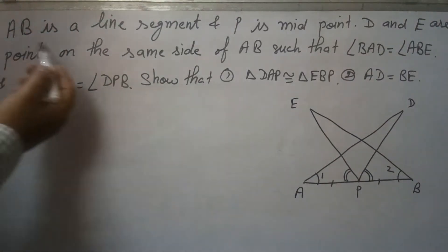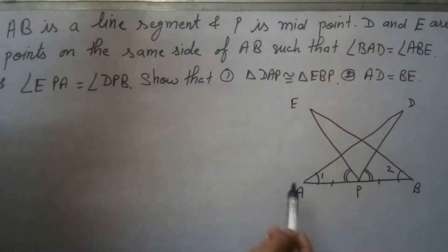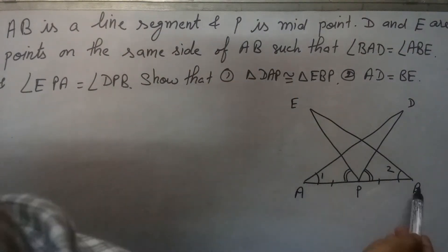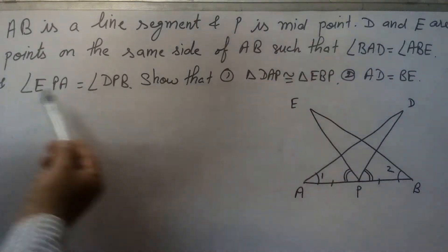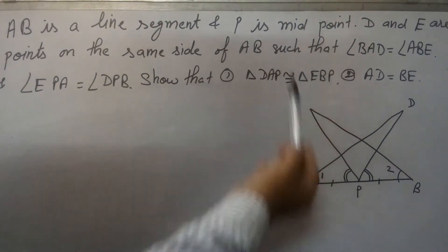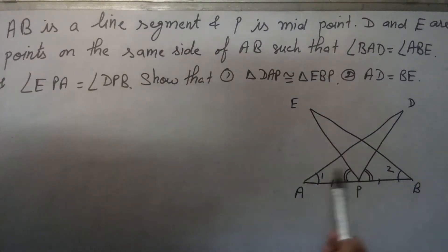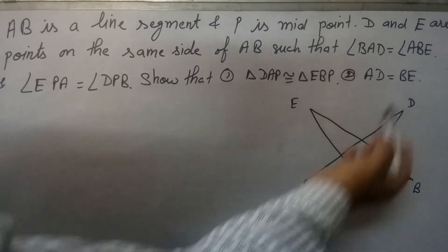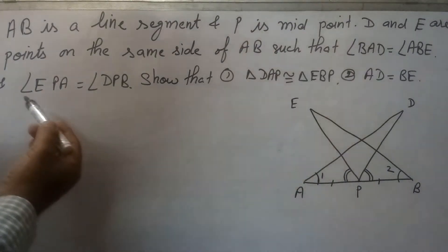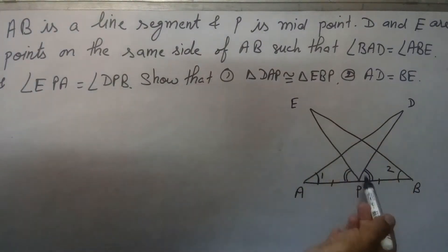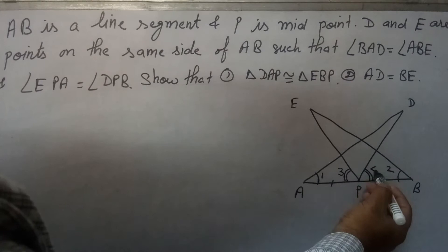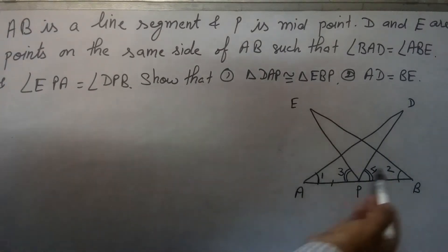Students, the question is: AB is a line segment and P is the midpoint, meaning AP equals PB. D and E are points on the same side of the line such that angle BAD (angle 1) equals angle ABE (angle 2). Let angle EPA be angle 3 and angle DPB be angle 4. So angle 1 equals angle 2.